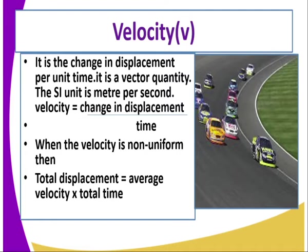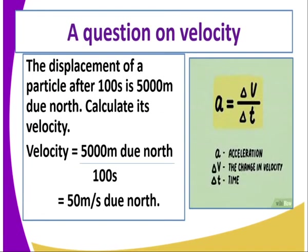Velocity is the change in displacement per unit time. It is a vector quantity, and the SI unit is meters per second. When velocity is non-uniform, total displacement is given by average velocity multiplied by total time taken. For example, the displacement of a particle after 100 seconds is 5,000 meters. Velocity equals total displacement — 5,000 meters due north — divided by total time taken of 100 seconds, giving 50 meters per second due north.